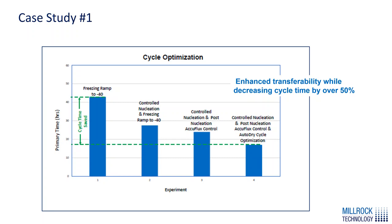Here's an example of a case study using sucrose. We used a standard cycle where we froze the product to minus 40 at half a degree C per minute and then went into primary drying, holding shelf temperature and pressure constant, resulting in a pretty long primary drying time. We then stepped through the available options in freezing — from controlled nucleation, to controlled nucleation with heat flow control after nucleation, and using auto-dry to control the product temperature close to but less than the critical temperature. We reduced the primary drying time by over 50%.